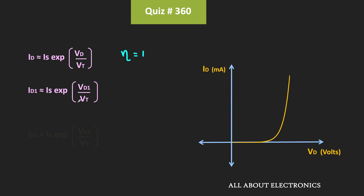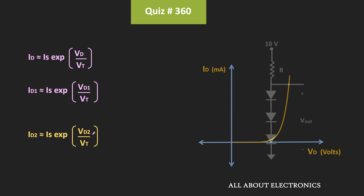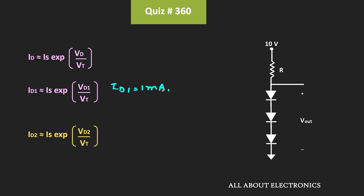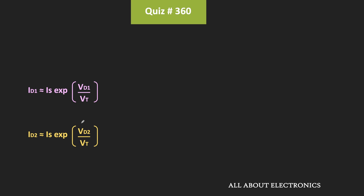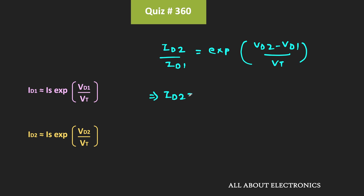Similarly, for some other current Id2, the expression can be written as Id2 = Is times e to the power (Vd2 / Vt), where Vd2 is the voltage drop across the diode. We know that when Id1 = 1mA, the forward voltage drop Vd1 is 0.7V. Dividing these two expressions, we get: Id2 / Id1 = e to the power ((Vd2 - Vd1) / Vt), or Id2 = Id1 times e to the power ((Vd2 - Vd1) / Vt).